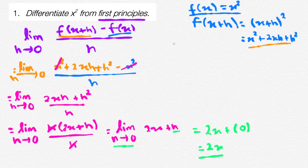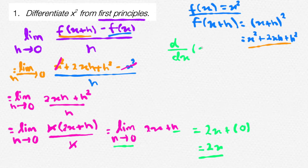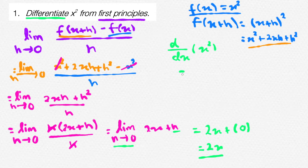This is how to differentiate using first principles. To make sure your answer is correct, let's differentiate x squared. The differentiation of x squared is simply 2x because we times and then take. Therefore, our answer from first principles is correct.